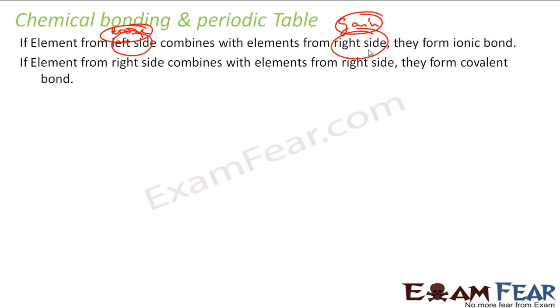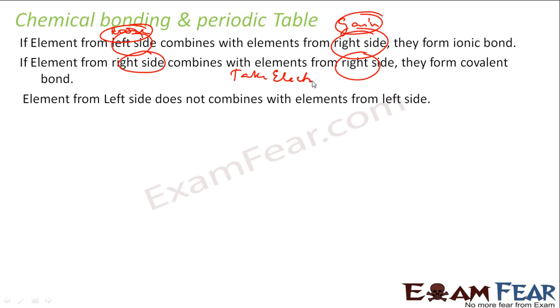If the element on the right side combines with the element on the right side, they form covalent bond. Because, for example, in this case, both want to gain electron. So if both want to gain electron, nobody will give. So they will come up with a conclusion that, okay, let's share it. Both want to take electron, nobody is ready to give. So they come with a model of sharing. For example, I'll take an example of CH4. Carbon wants electron, hydrogen wants electron. Both want electron. Nobody is ready to give electron. So they say, okay, we'll share electron.